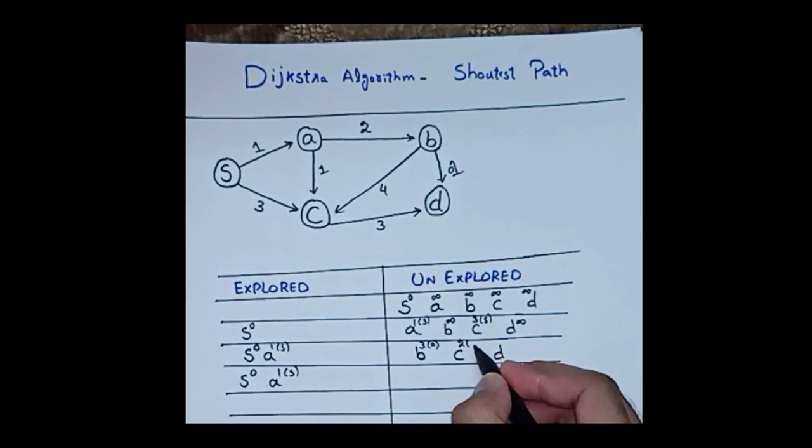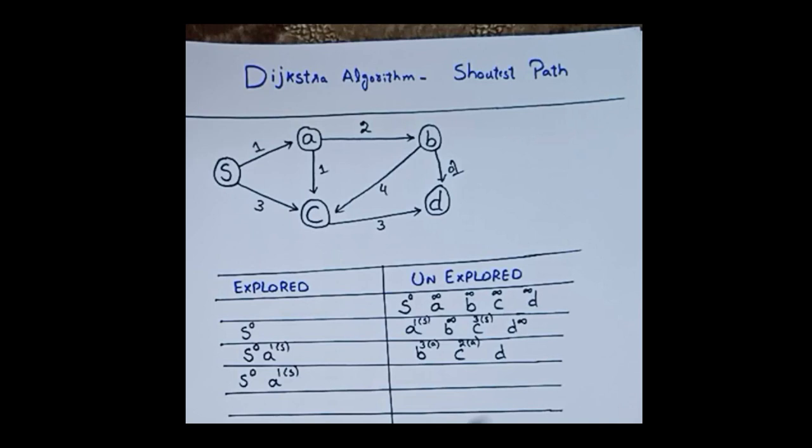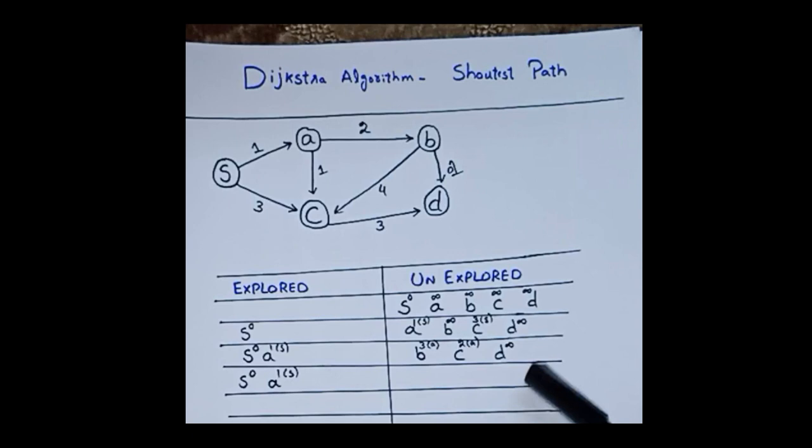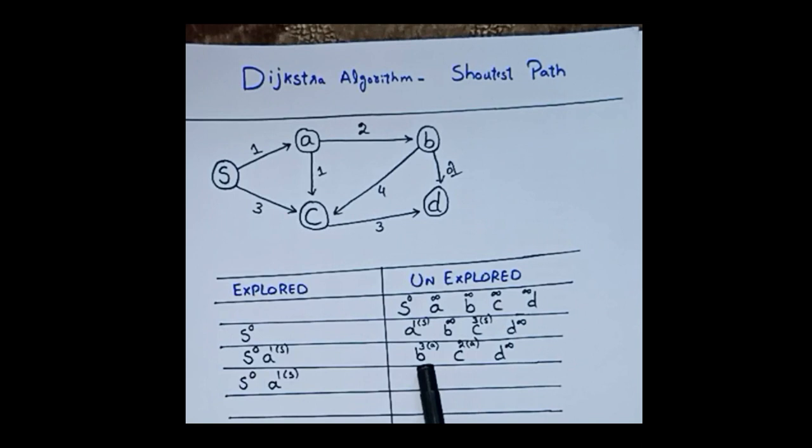Is there a direct edge from A to D? No, there is no direct edge from A to D, so I do not change its distance — it stays infinity. Through the remaining unexplored nodes, C has distance 2 which is minimum, so I pick C and make it an explored node.